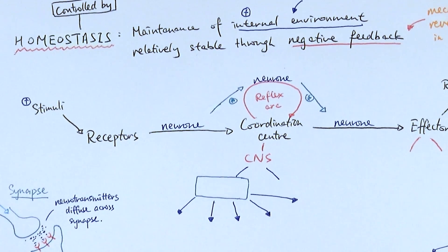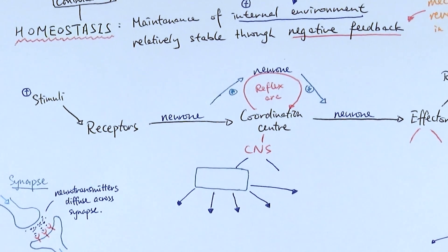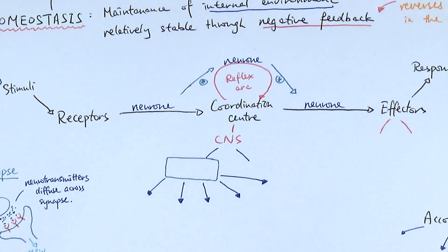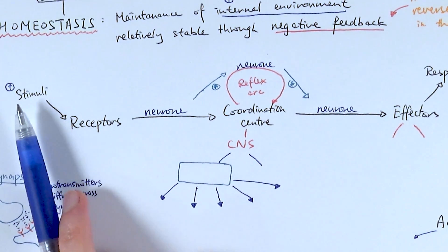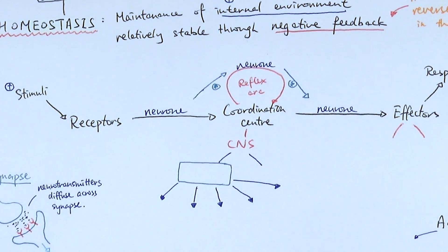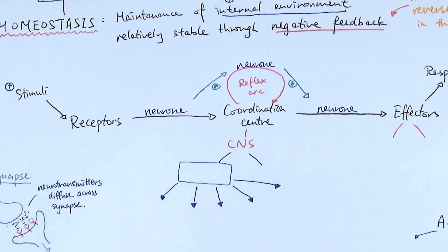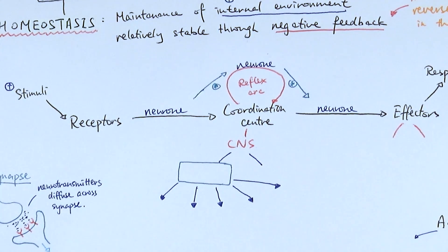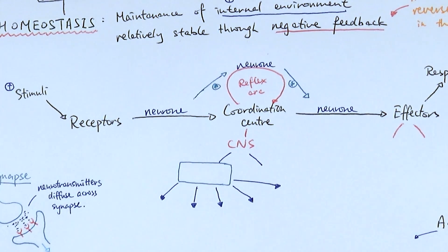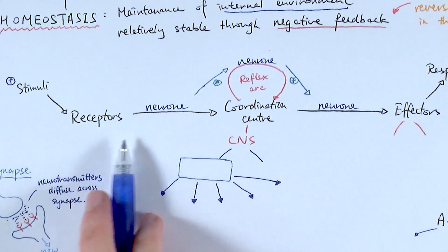The general pathway for homeostasis and the nervous system starts with stimuli. The stimulus represents those internal environment changes — blood glucose level, body temperature, water levels, or even pain or light in the eye. These stimuli are detected by different types of receptors — for example, photoreceptors in the retina (cone cells and rod cells) for light, pain receptors for reflex responses, or other receptors detecting blood glucose levels and temperature.